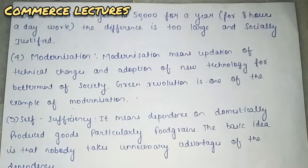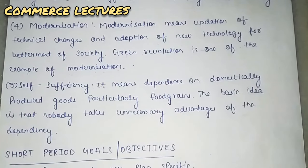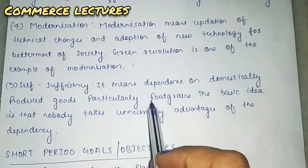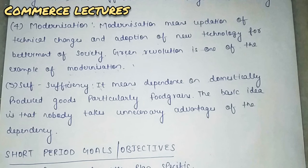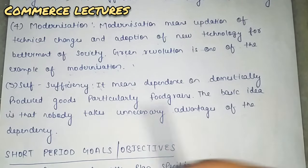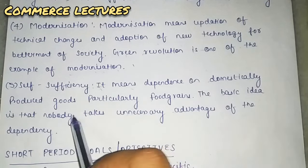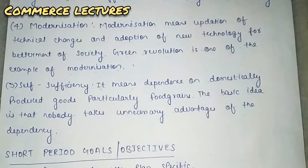Self-sufficiency means being more dependent on domestically produced goods, particularly food grains. The basic idea is that nobody takes unnecessary advantage of your dependency — you produce more and more and become self-dependent so that others cannot take unnecessary advantages.